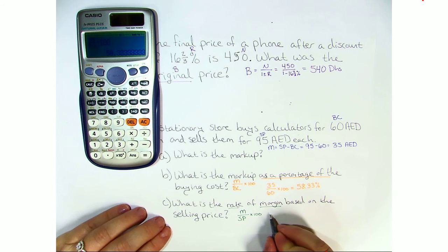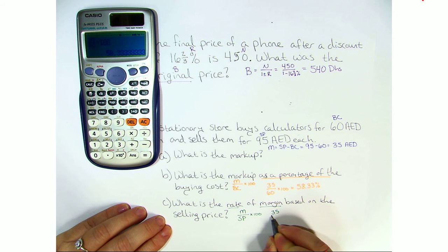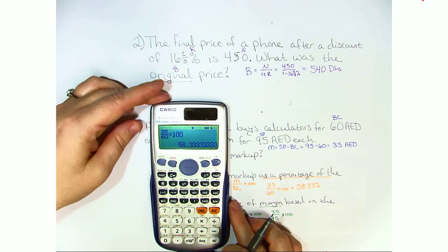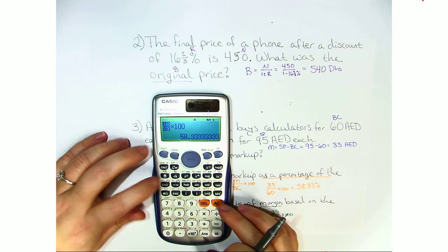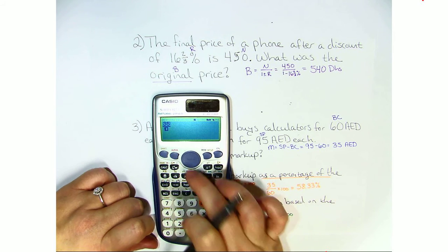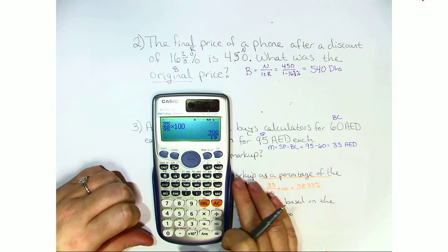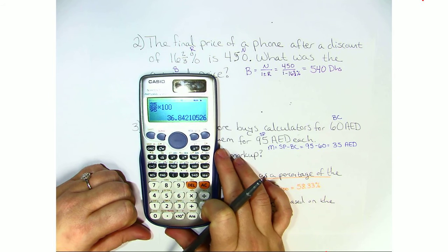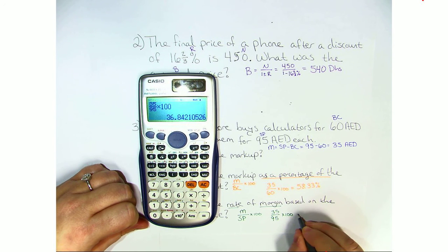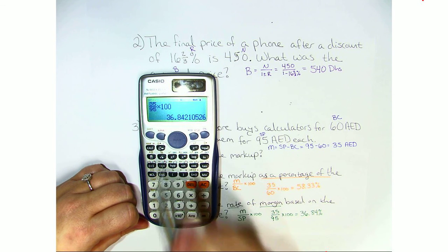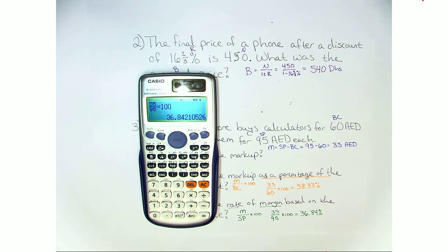So this would be 35 over 95 times 100. Go ahead and put that in our calculators. 35 over 95 times 100. We hit equals and we get that the rate is 36.84%. The 4 stays the same because it's followed by a 2.